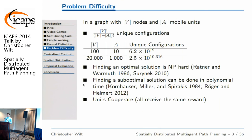So how difficult is this type of problem? If we have a graph with V vertices and A mobile units, the formula describes exactly how many unique configurations there are. If we have a grid with 100 vertices and 10 agents, we have more than 6.2 times 10 to the 19th states. And for a Kiva warehouse with 1,000 robots and 20,000 different places they can be, I don't even know how to articulate the largeness of this number — the exponent itself is in the thousands. The number of states you have to deal with can be absolutely astronomical extremely quickly.